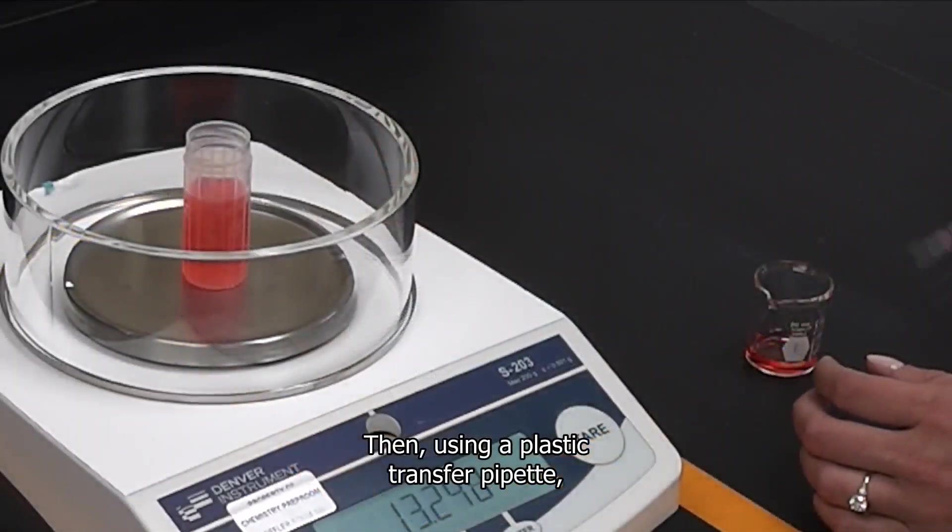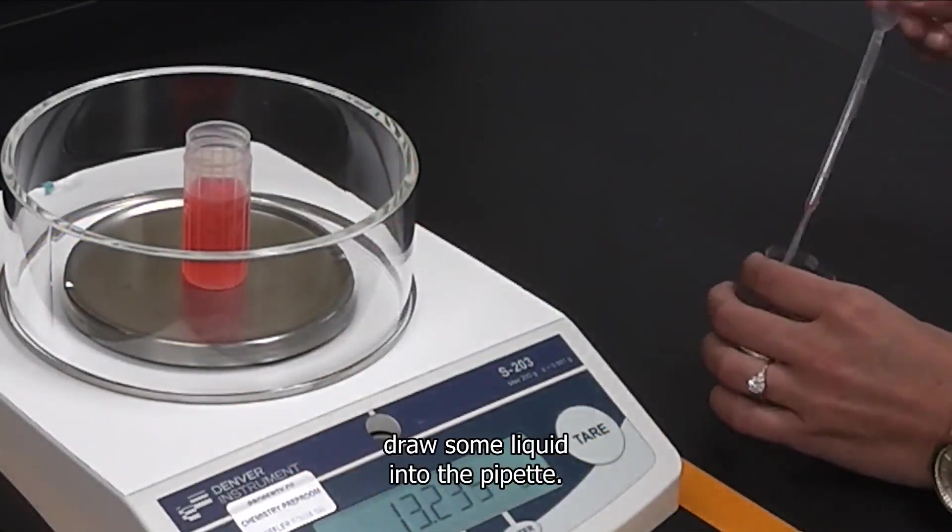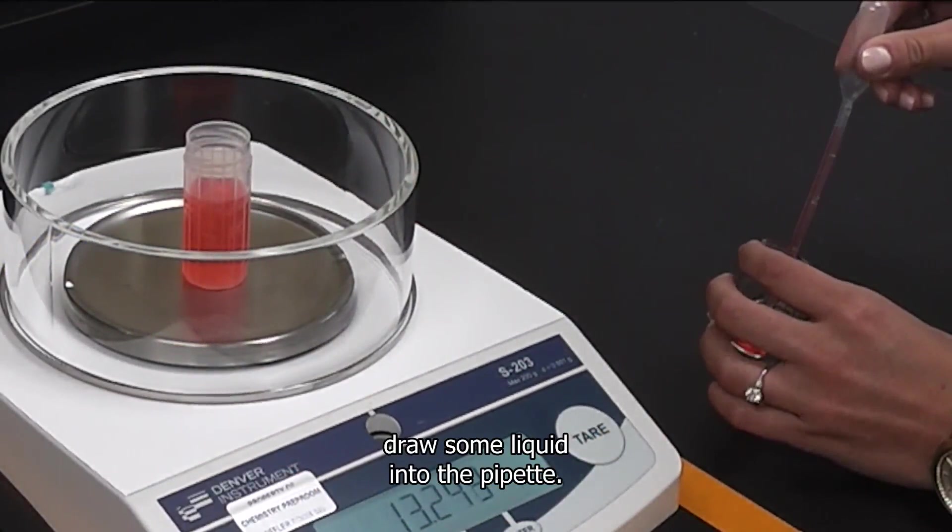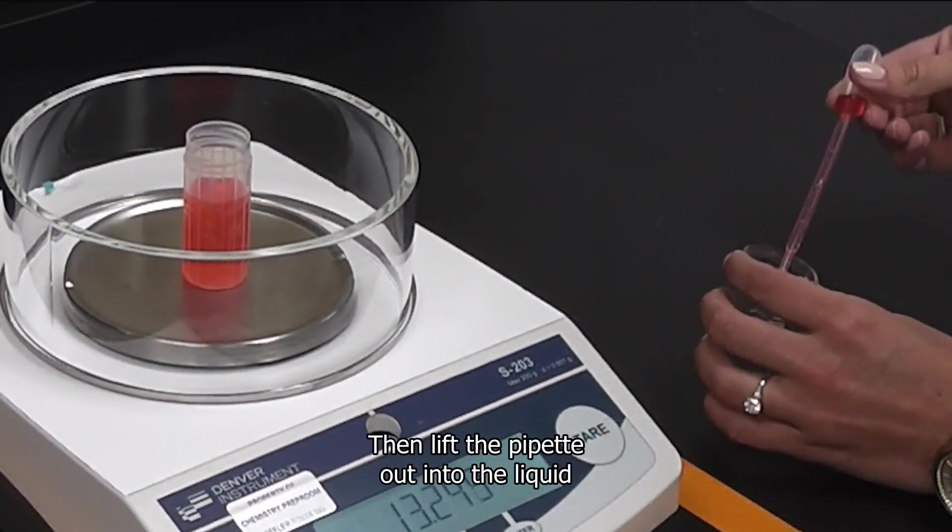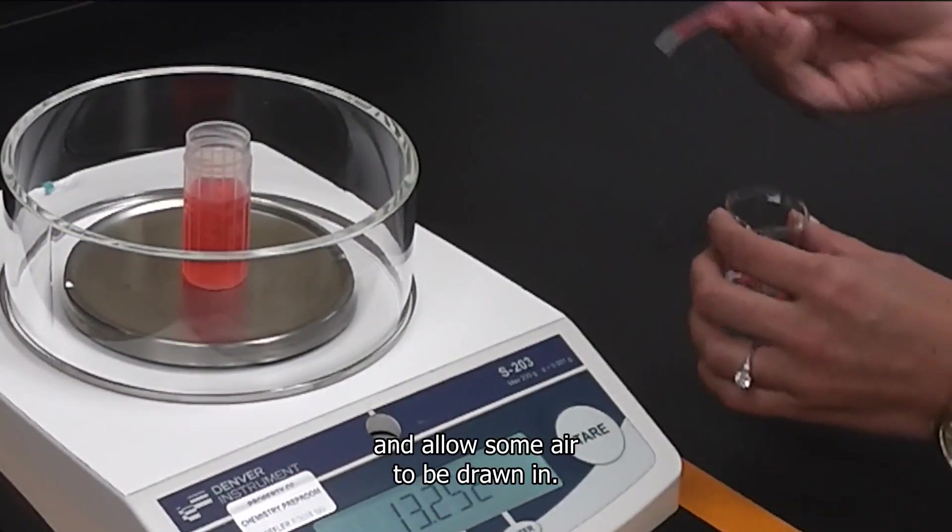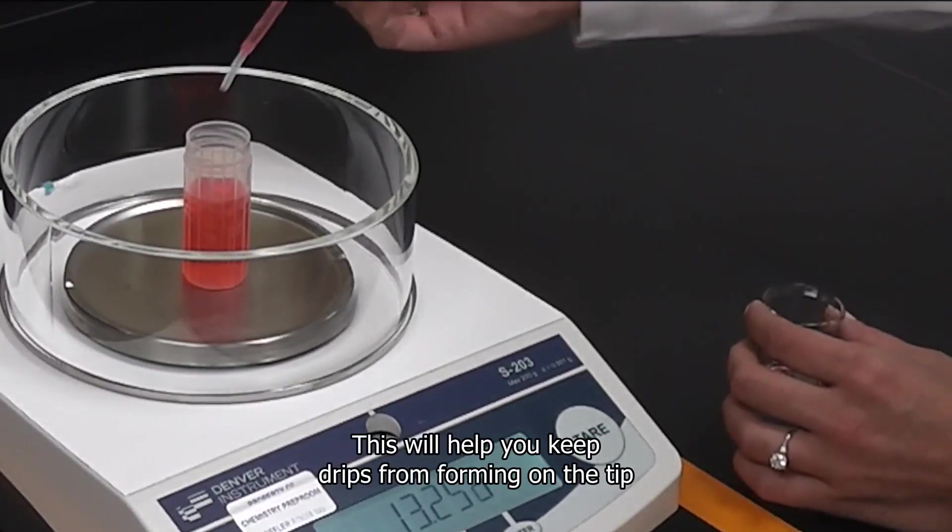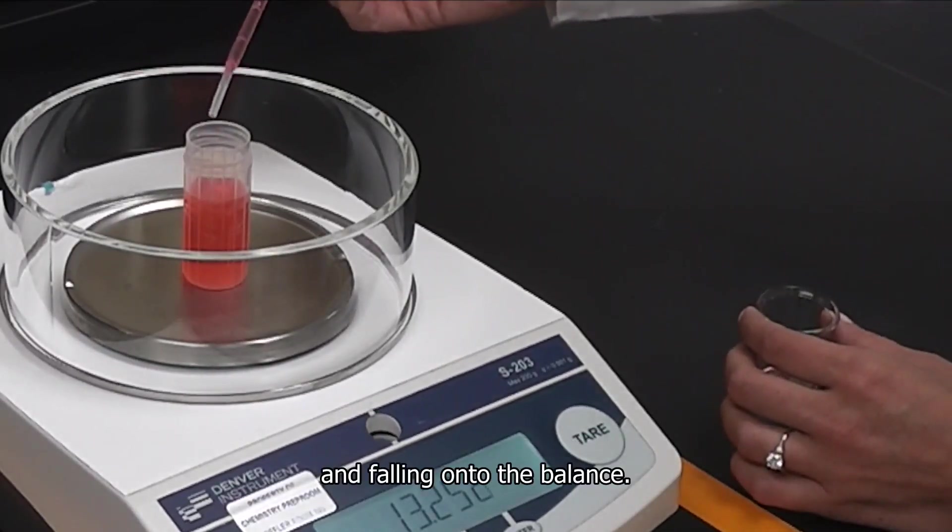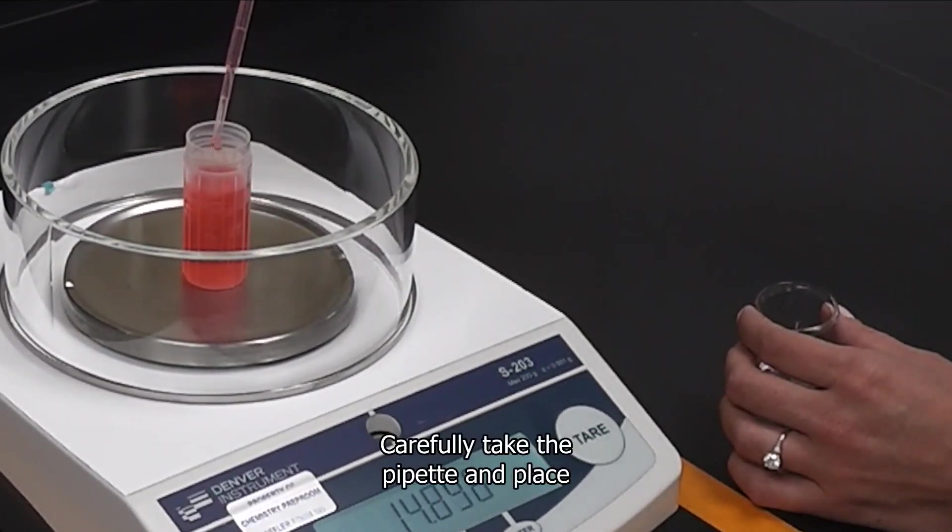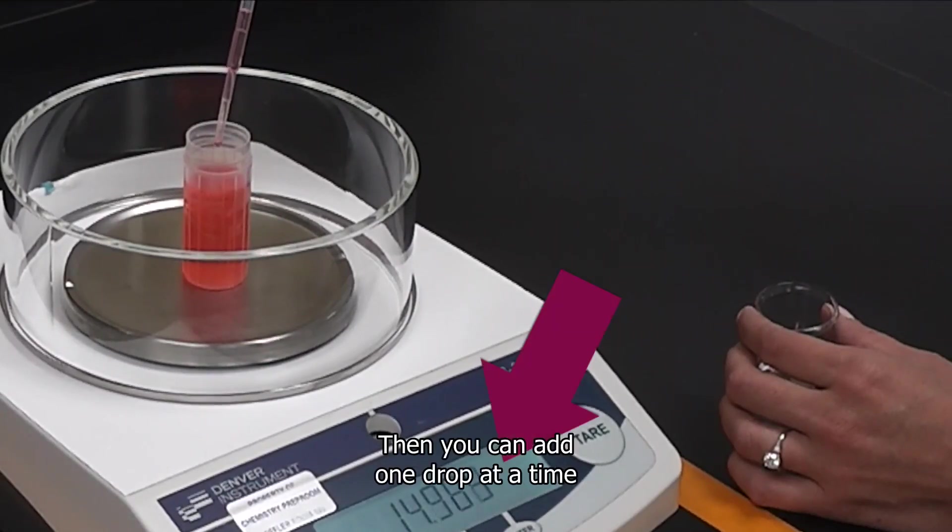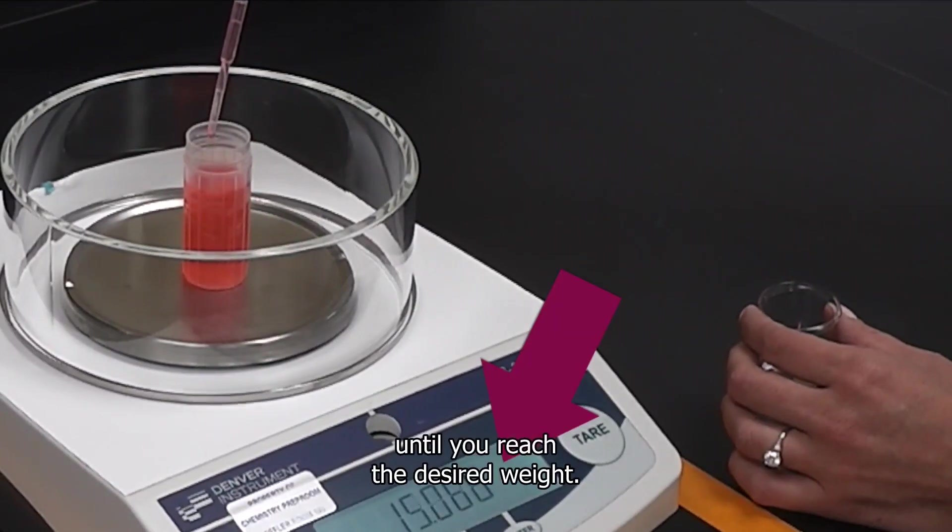Then, using a plastic transfer pipette, draw some liquid into the pipette, then lift the pipette out of the liquid and allow some air to be drawn in. This will help you keep drips from forming on the tip and falling onto the balance. Carefully take the pipette and place the tip inside the vessel. Then you can add one drop at a time until you reach the desired weight.